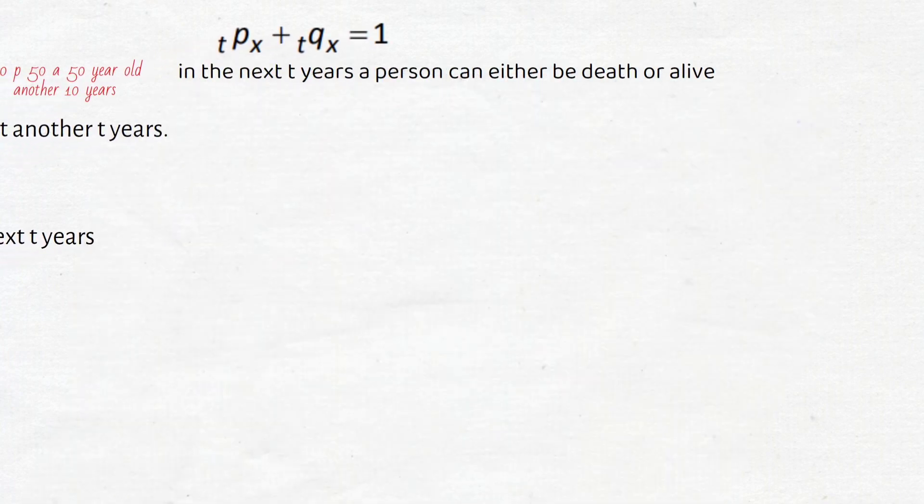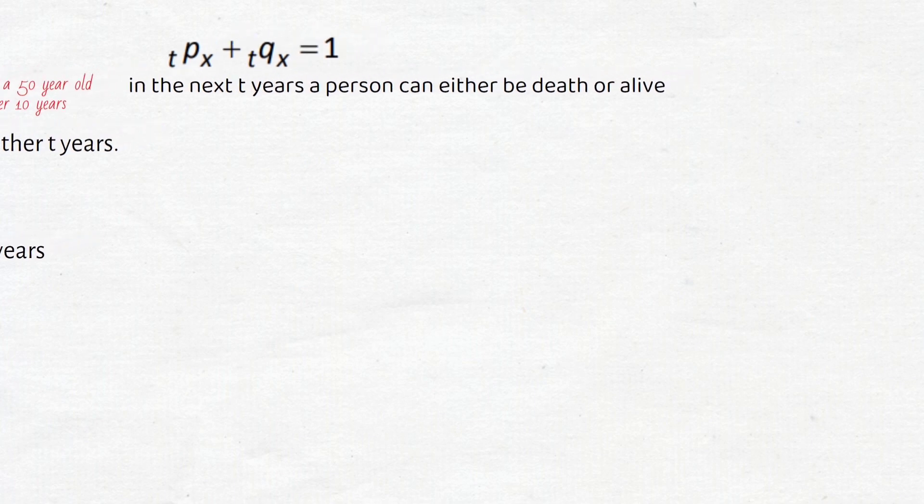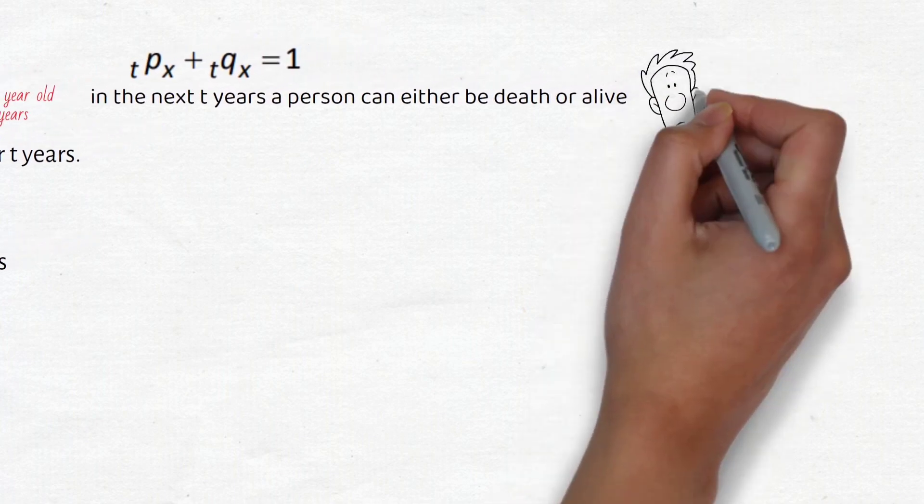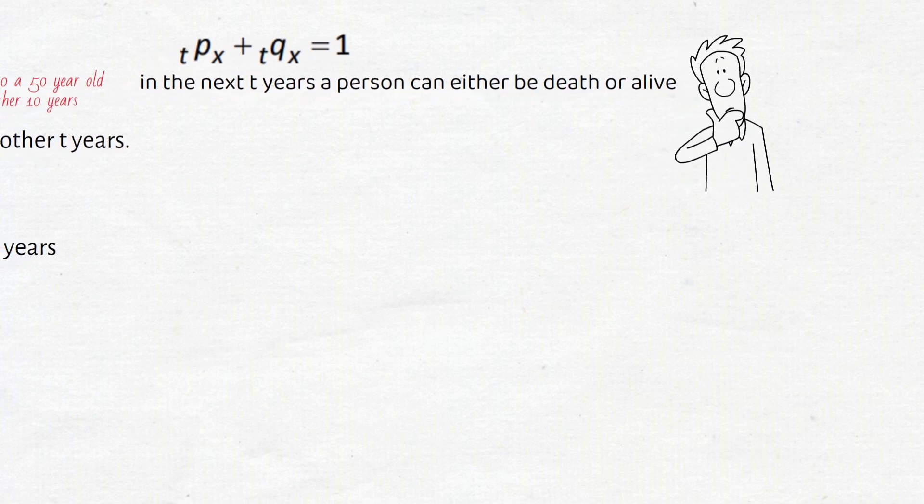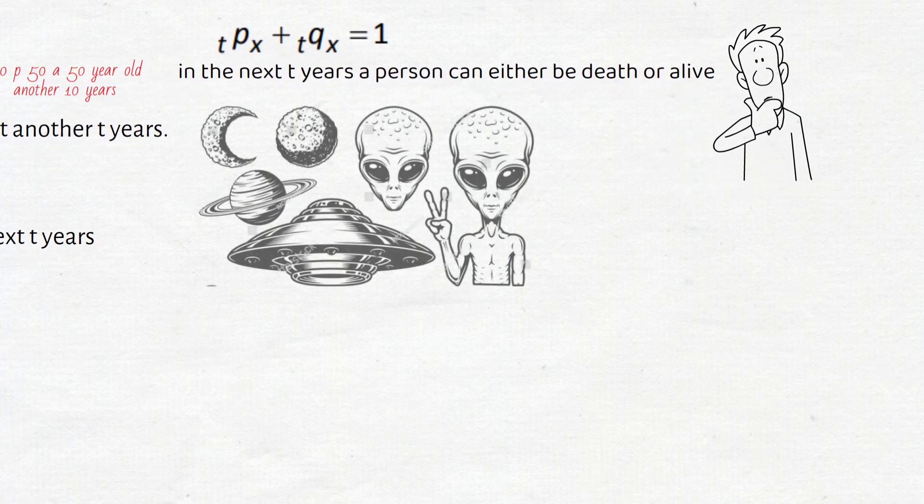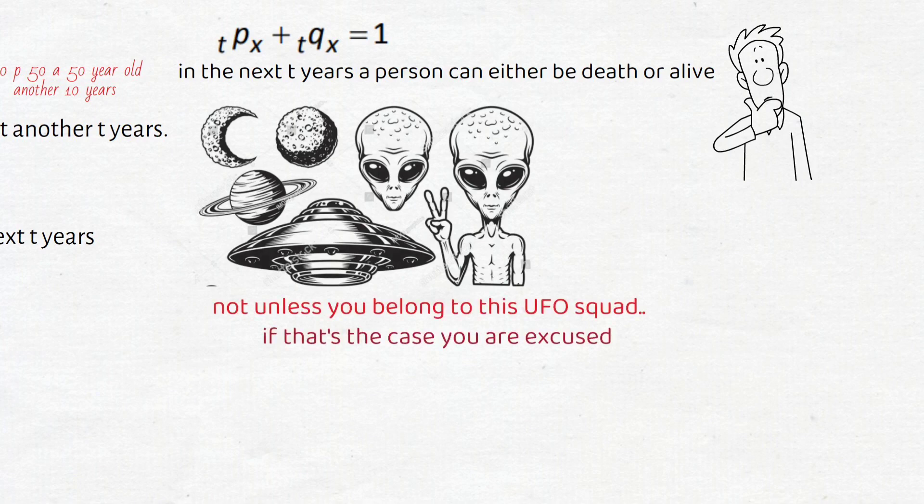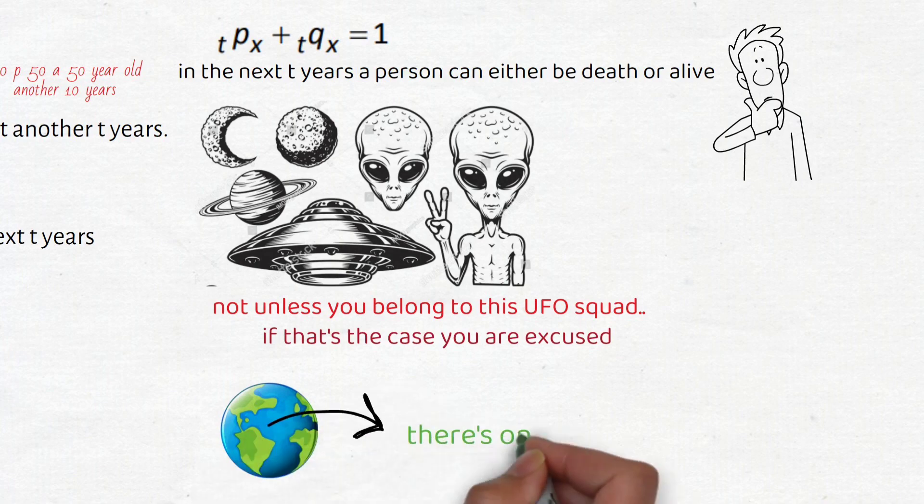We also need to note that the sum of these two probabilities will be equal to one. So tpx plus tqx should give us one, since in the next t years a person can either be dead or alive. Because if you are not in one of those two states, what else could be happening with you? Not unless if you're from a different planet or universe where other things are possible that we don't know of. But on Earth a person can either be dead or alive. That's why the sum of those two probabilities will give us one.